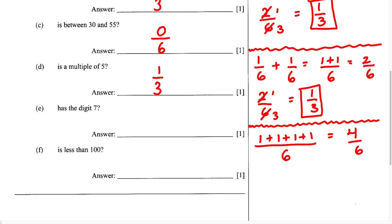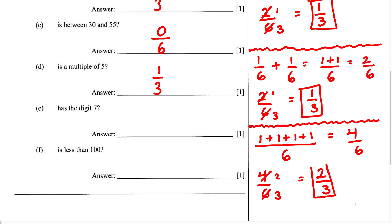Before we write our final answer, let's make sure it's in its lowest terms. We have 4 over 6, which is not in lowest terms because both are even numbers and divisible by 2. We know 2 goes into 4 two times, and 2 goes into 6 three times. So our probability in its lowest terms is 2 over 3.